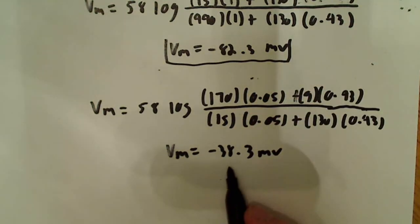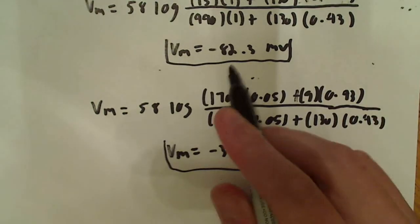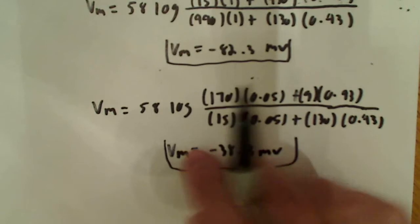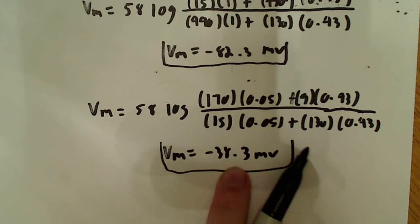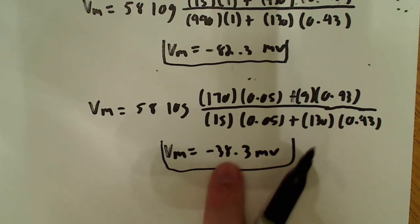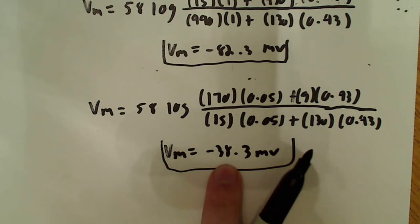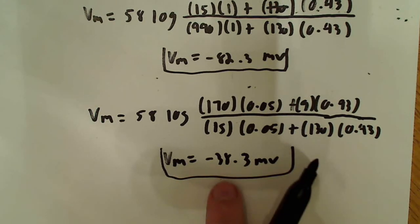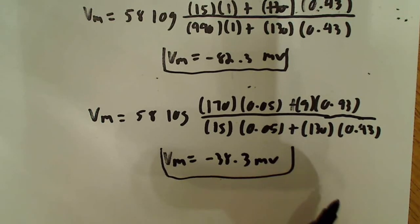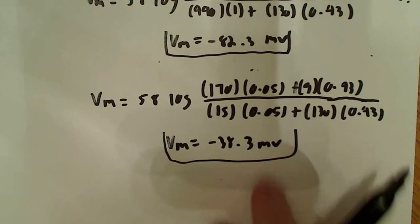Now you can see that this cell has become substantially more positive. In the sodium channel blocker case we had negative 82.3 mV, and over here with the potassium channel blocker we wound up with a much more positive — still negative, but much more positive — value of negative 38.3 mV. It's important to note the differences depending on what channel is being inhibited or blocked; potassium plays a large role in the overall resting membrane potential.